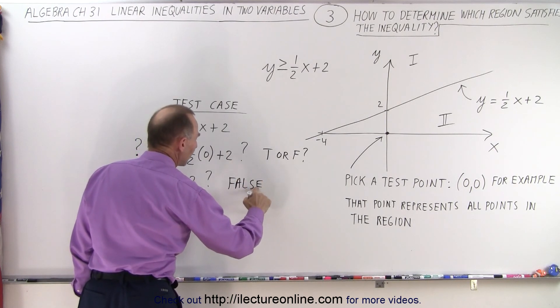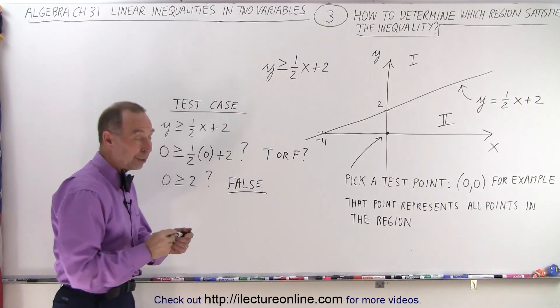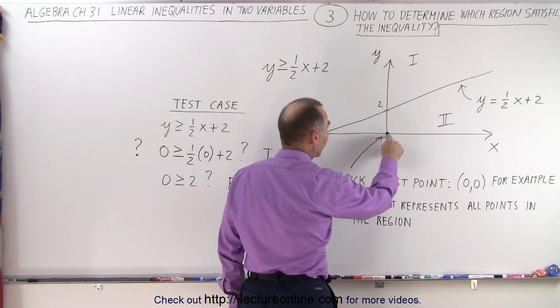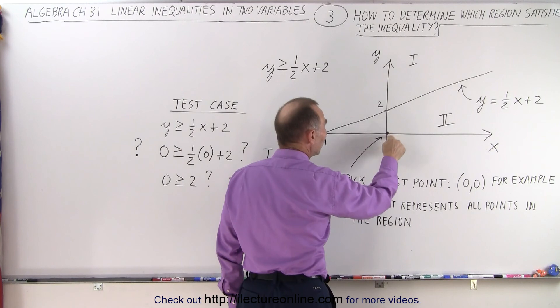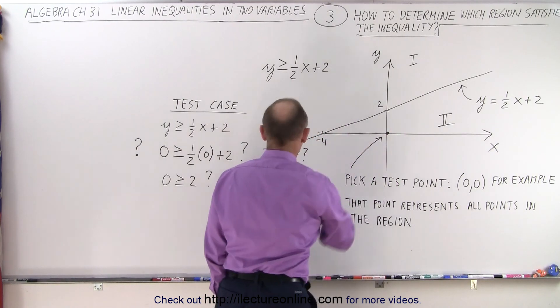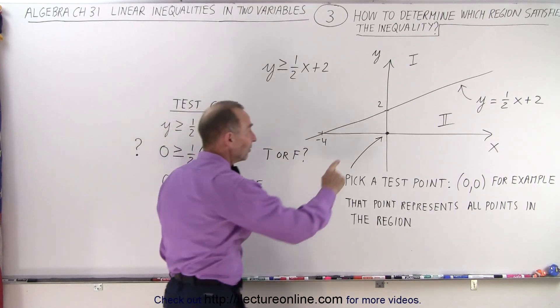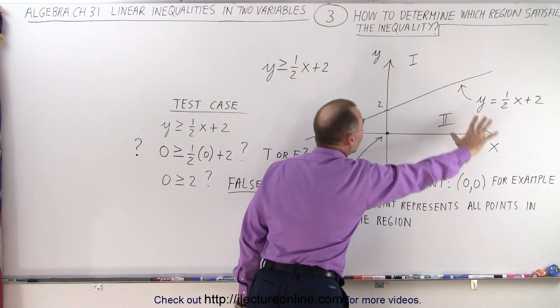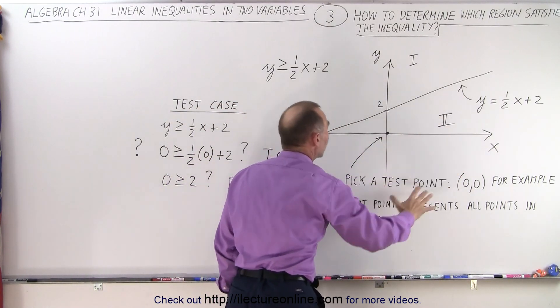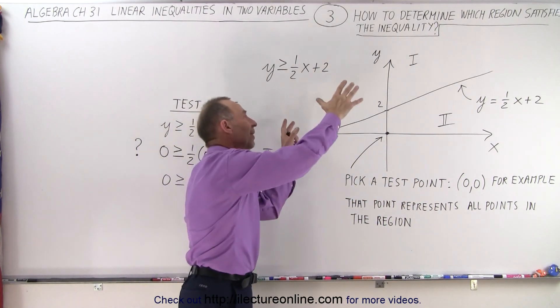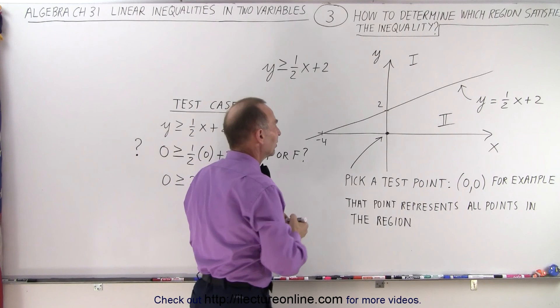We picked a test point in one of the two regions. We tested this point to see if it satisfied the inequality, and the answer is no, it did not. That means this point as well as all of the points in this region do not satisfy the inequality. Therefore, all the points on the other side of the dividing line do satisfy the inequality.